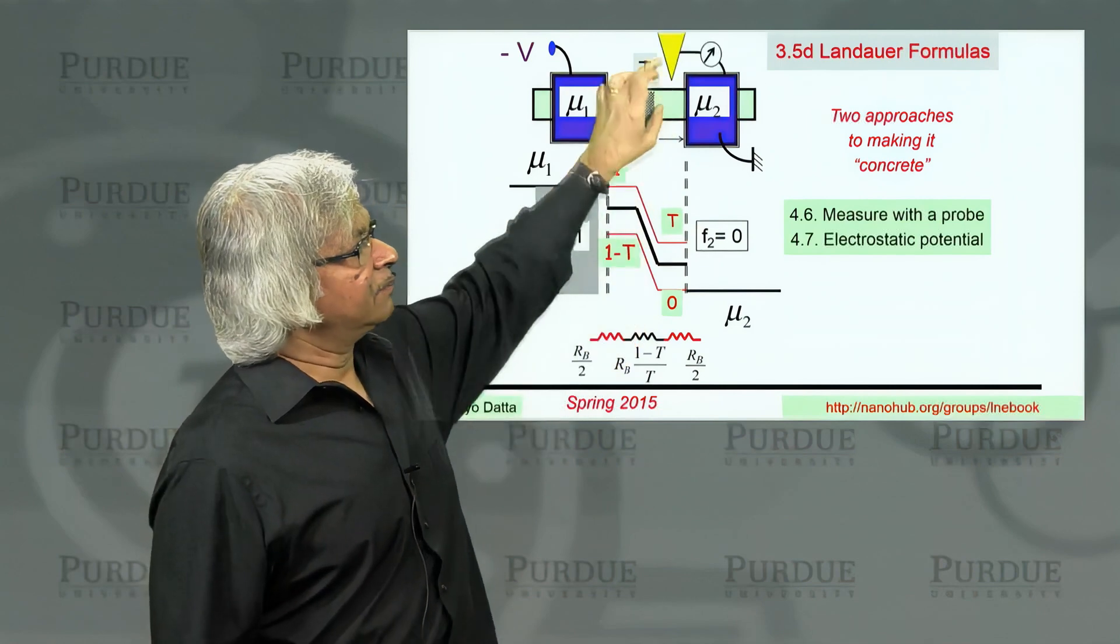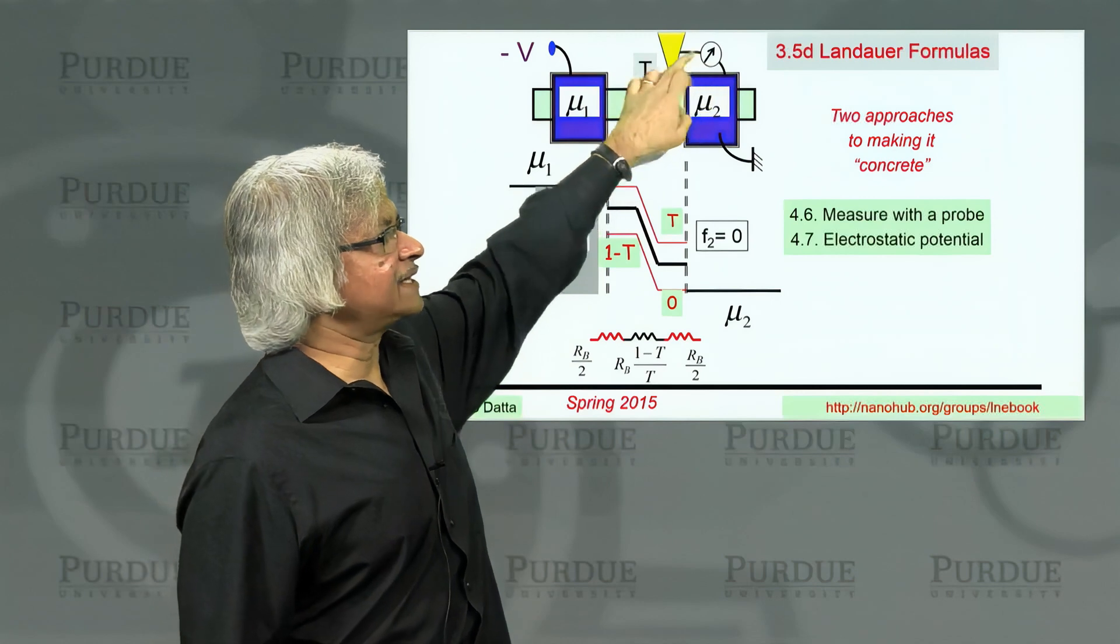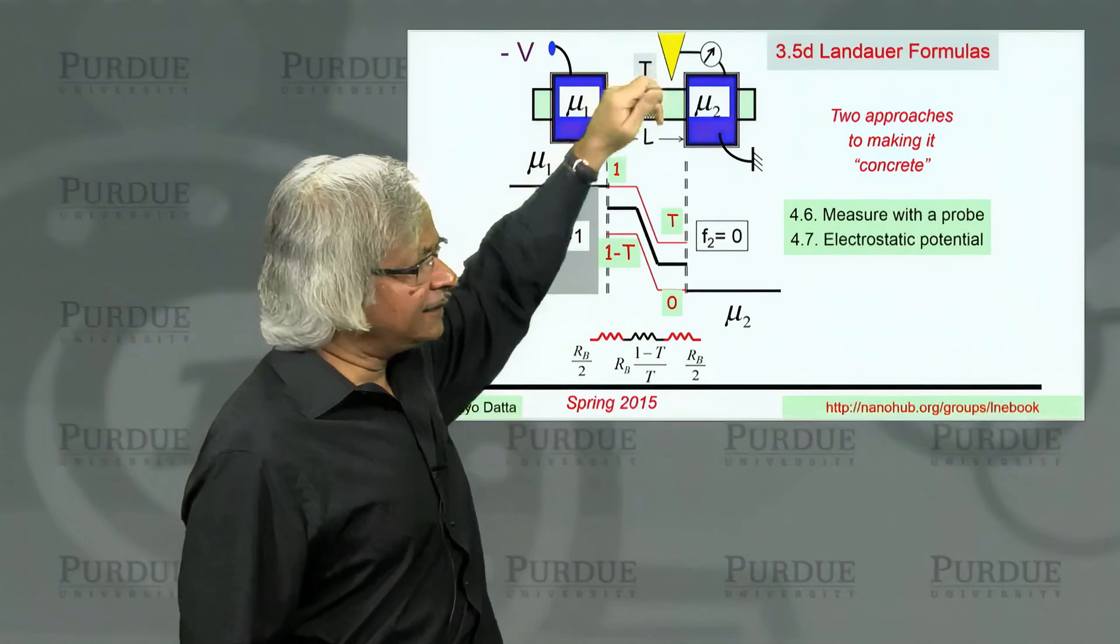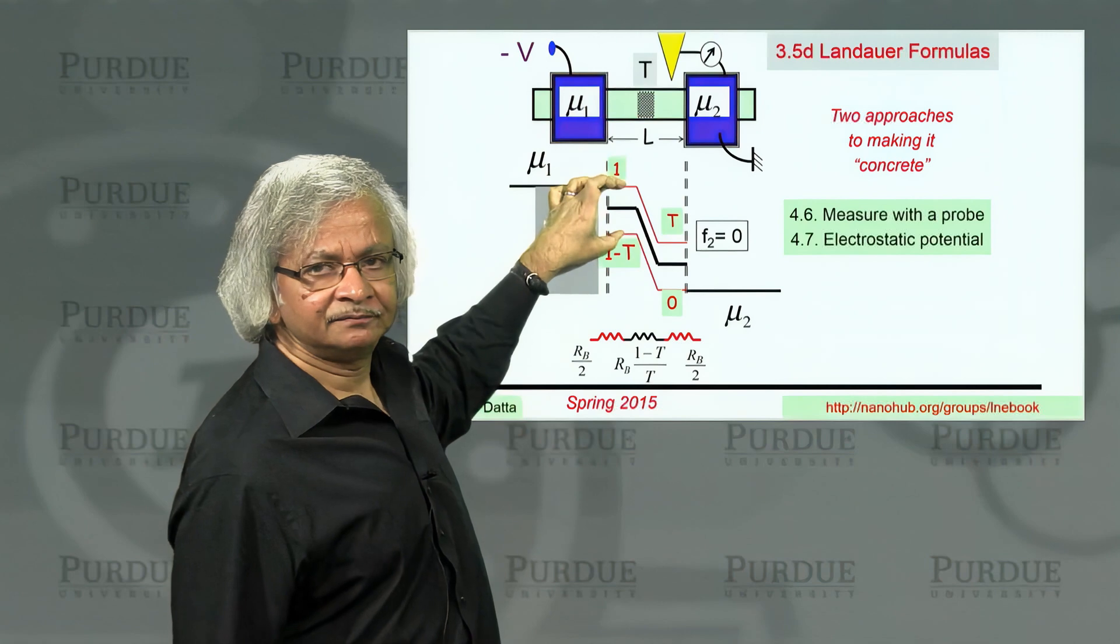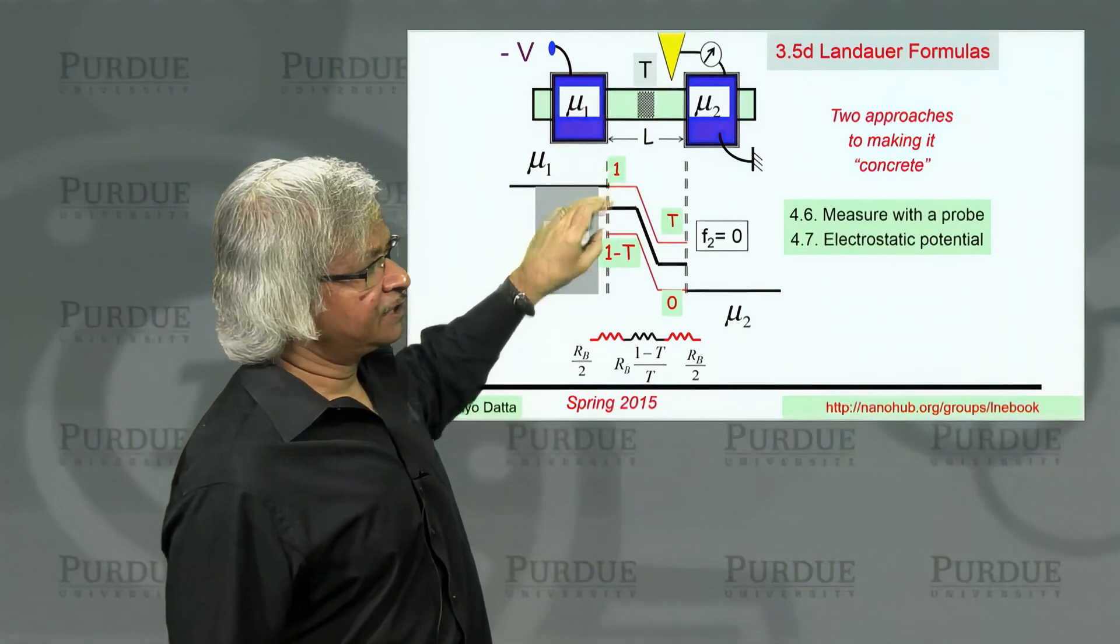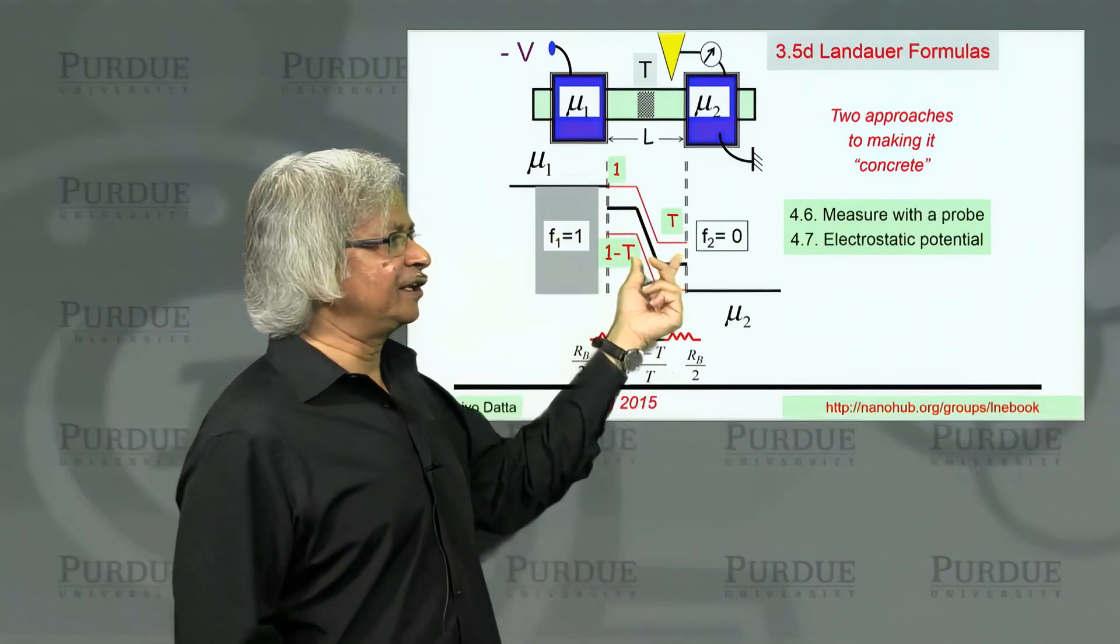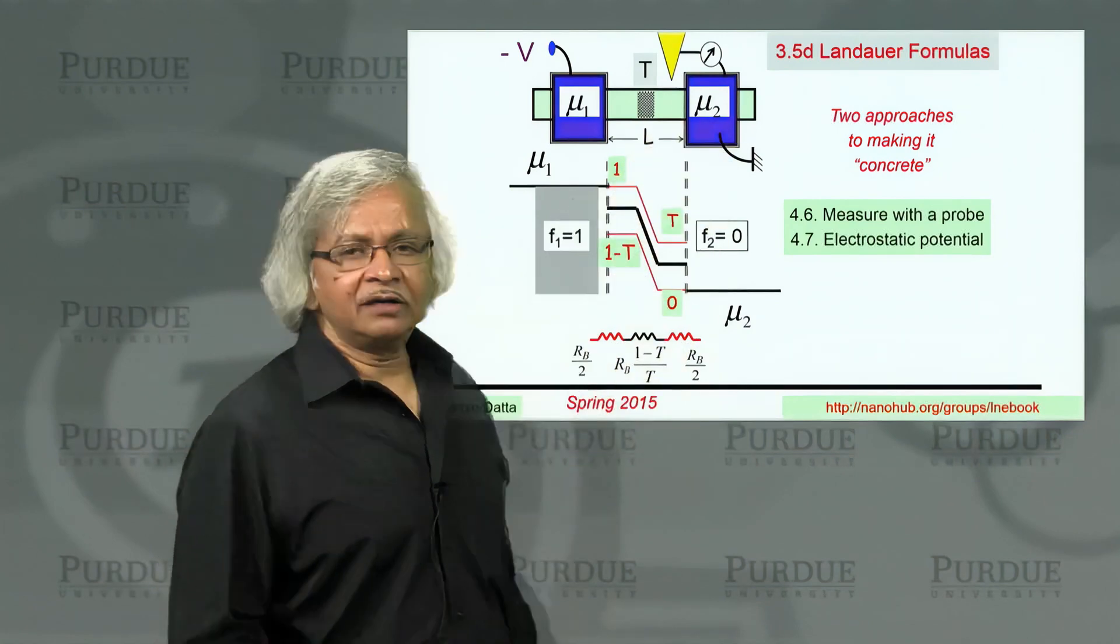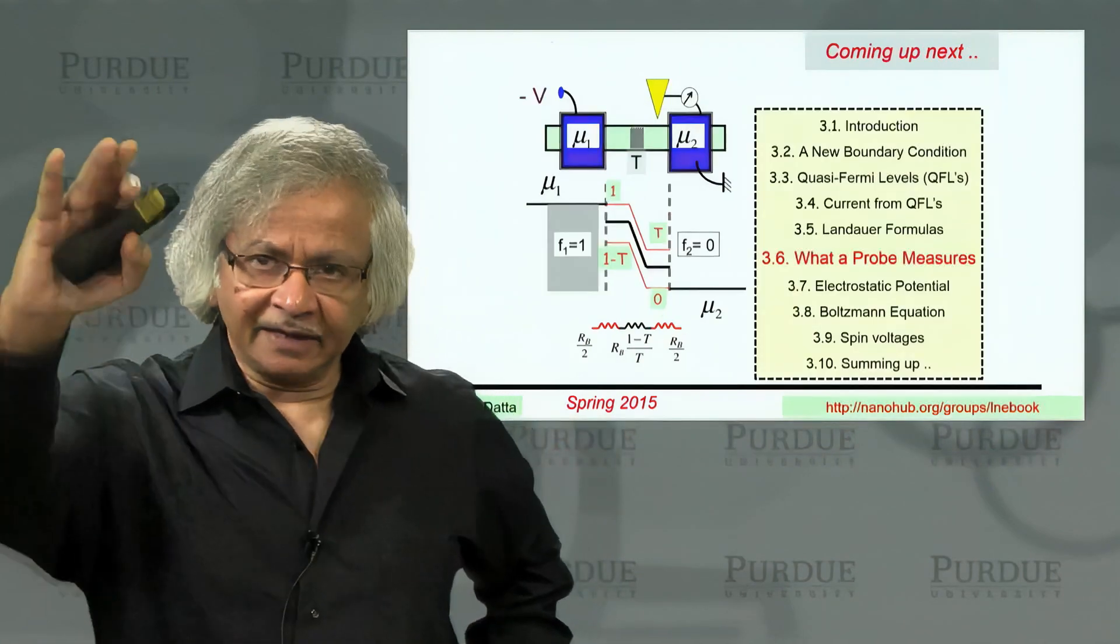If I actually had a scanning probe coming down here and measuring the potential, what would it measure? The answer is usually a probe would measure the average. A weakly coupled probe would measure the average, which means the black curve. That would be one way to justify why we should be looking at the average, the black curve. But this is what we'll talk about, what a probe measures. That's what we'll be talking about in the next lecture.